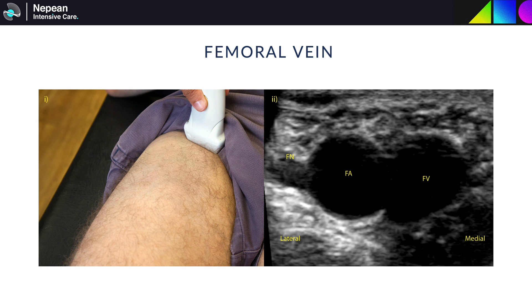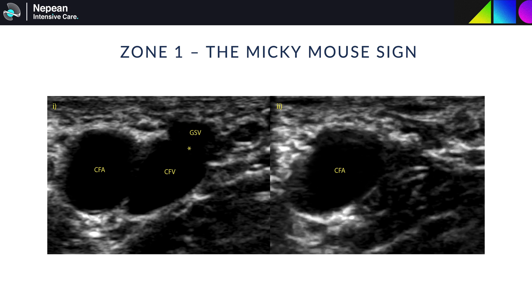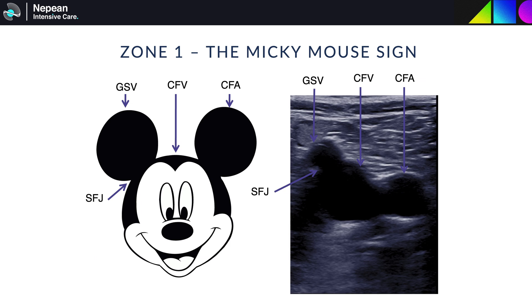The femoral vein is seen adjacent to the femoral artery at the level of the inguinal ligament — a view that many of you are familiar with from central line insertion. As this is followed inferiorly, the junction between the common femoral vein and saphenous vein can be seen. This is known as the saphenofemoral junction and is point one of the three-point scan. The anatomy at this point is commonly referred to as a Mickey Mouse sign, with Mickey's face representing the common femoral vein and the ears the common femoral artery and the saphenous vein.